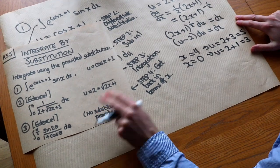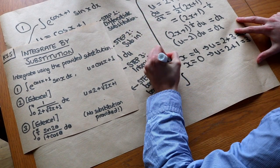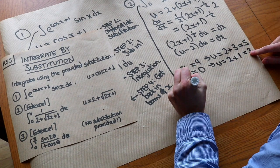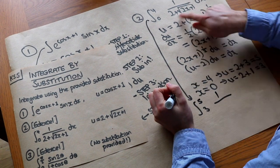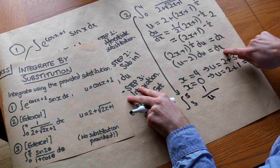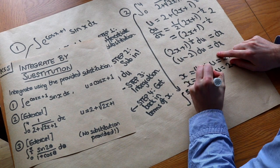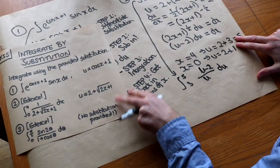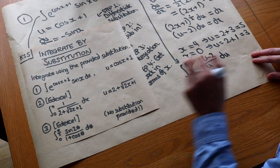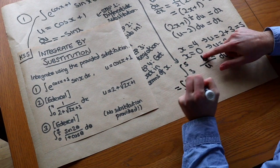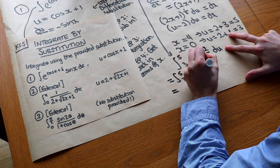Substituting everything in with limits 5 and 3: we have 1 over u — since 2 plus root(2x+1) is just u — times (u minus 2) du, which gives (u minus 2) over u. This fraction can be split up as u over u minus 2 over u, which is 1 minus 2 over u. That's relatively easy to integrate.